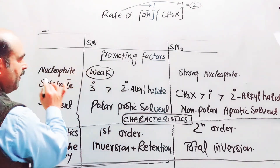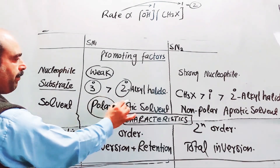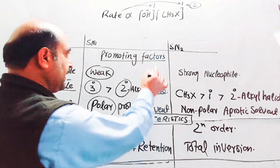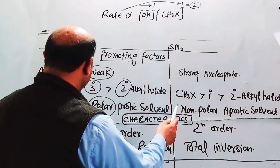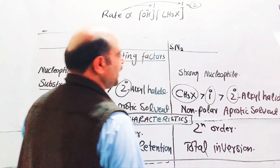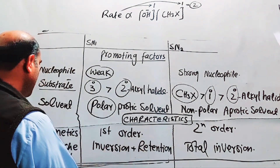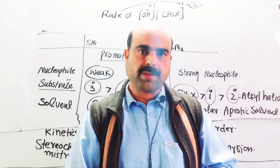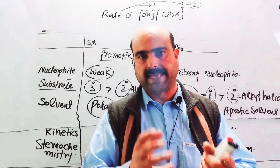Summary: SN1 promoting factors — weak nucleophile, tertiary then secondary alkyl halide substrate, polar protic solvent; kinetics — first order; stereochemistry — 50% inversion and 50% retention. SN2 promoting factors — strong nucleophile, methyl halide then primary alkyl halide substrate, non-polar aprotic solvent; kinetics — second order; stereochemistry — 100% inversion. Thanks a lot for watching.